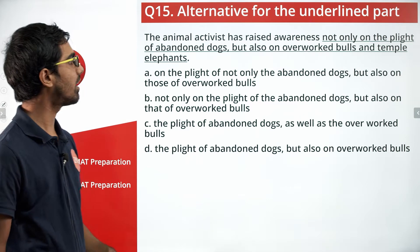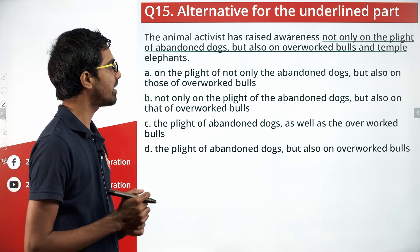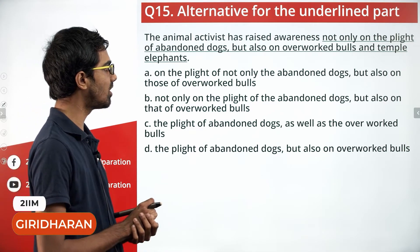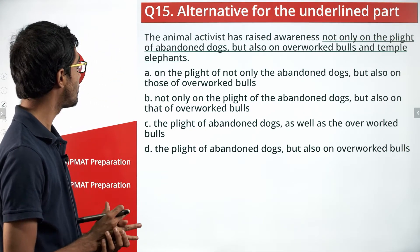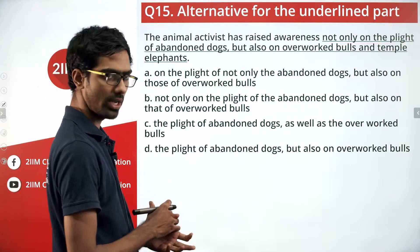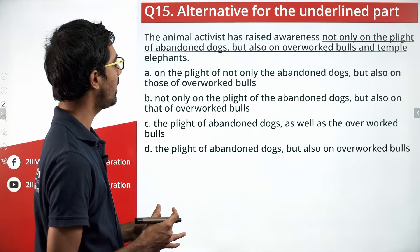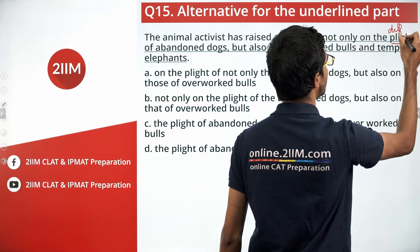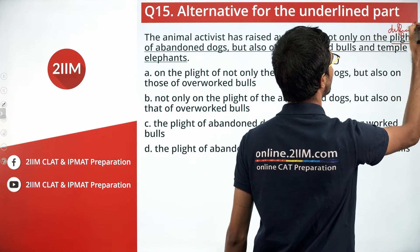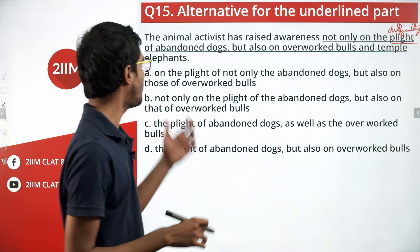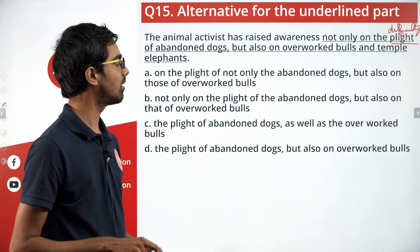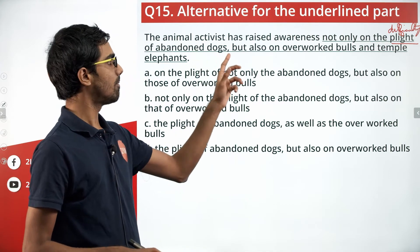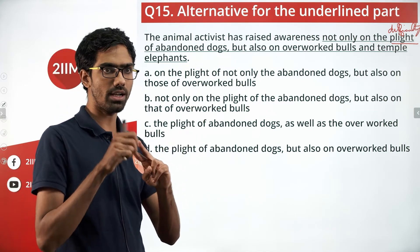Question 15: The animal activist has raised awareness not only on the plight of abandoned dogs but also on overworked bulls and temple elephants. What does this statement convey in its essence? The animal activist has raised awareness on the plight of two different animal species.